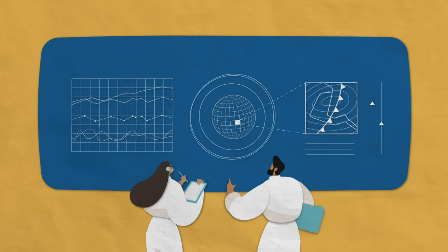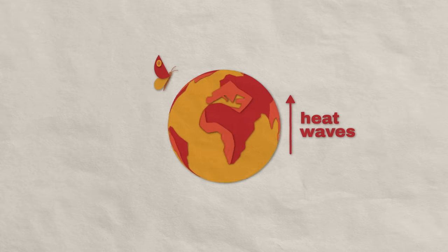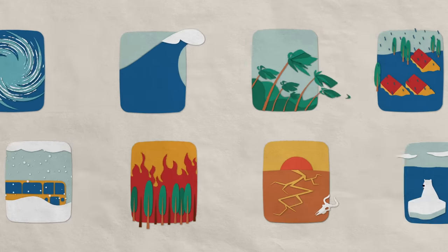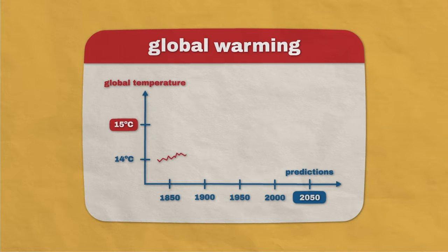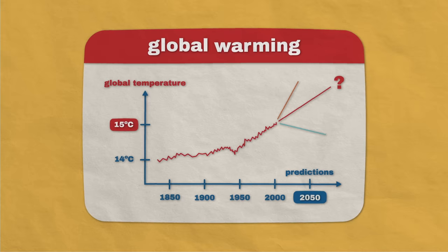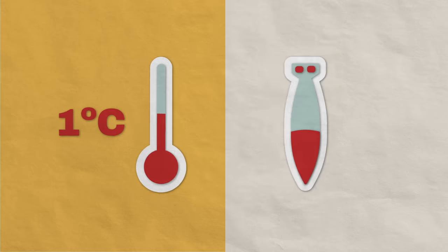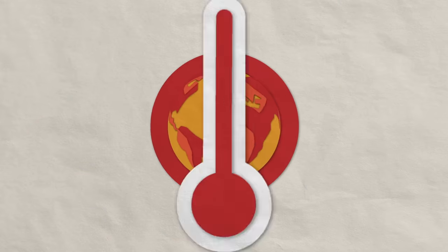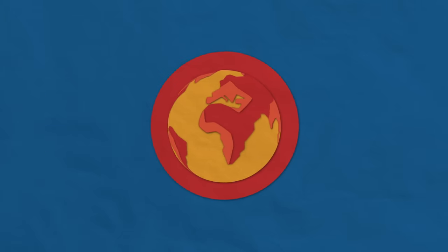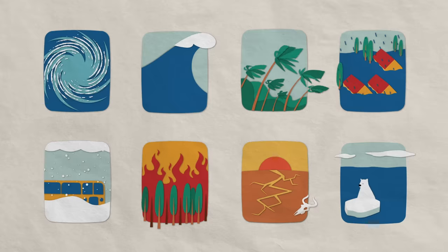But here's where it gets tricky. Even the slightest change in these boundary conditions represents a much larger shift for the chaotic weather system. For example, Earth's surface temperature has warmed by almost one degree Celsius over the last 150 years. This might seem like a minor shift, but this one degree change has added the energy equivalent of roughly one million nuclear warheads into the atmosphere. This massive surge of energy has already led to a dramatic increase in the number of heat waves, droughts, and storm surges.